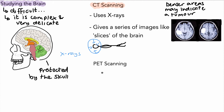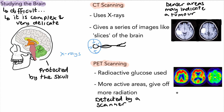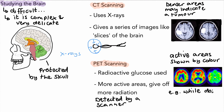We also have something called PET scanning. This is when radioactive glucose is given in a drink to the patient, and the more active areas in the brain give off more radiation, which is detected by a scanner. The advantage of this is it gives us colour — different areas of the brain show different colours — so you can see how active different parts of the brain are based on what a person might be doing, giving us an idea of which part of the brain does which function.